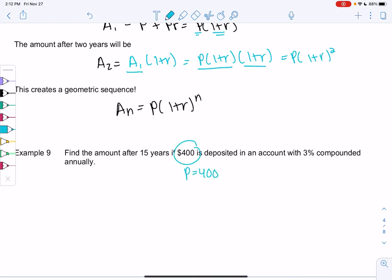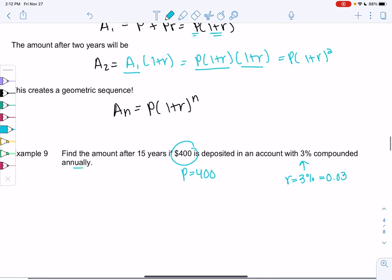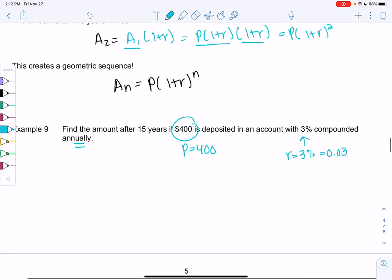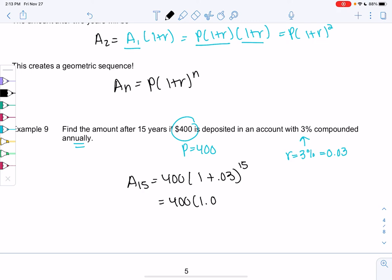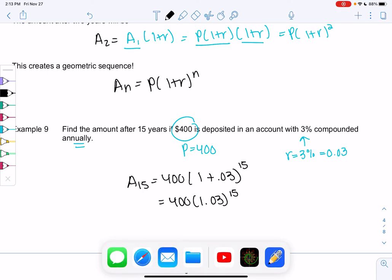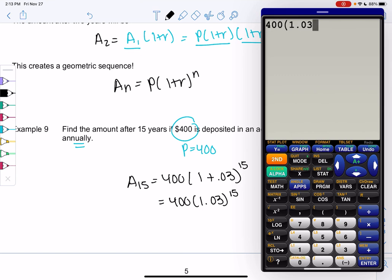That'll be P, and we get 3% interest, so that means my r is 3%, which will be 0.03, and it's compounded annually. So every year it gets compounded once. We can find the amount after 15 years, meaning we start with 400, and the (1 + 0.03) gets compounded 15 times, so that's where we get the 15 power. We get 400 times 1.03 to the 15th power, and we can just calculate that really quickly: $623.19 after 15 years.